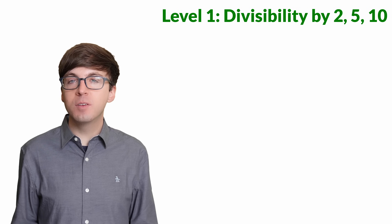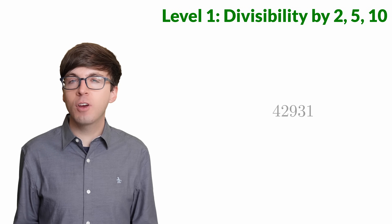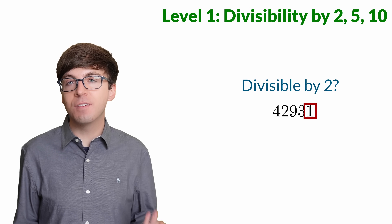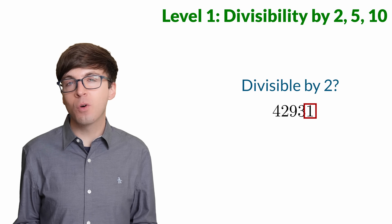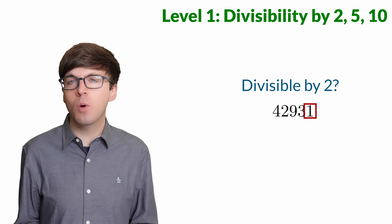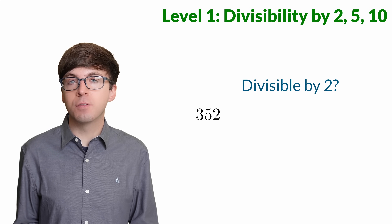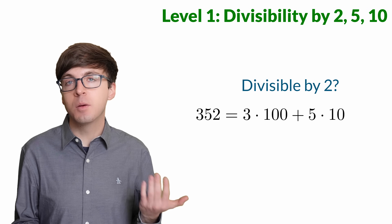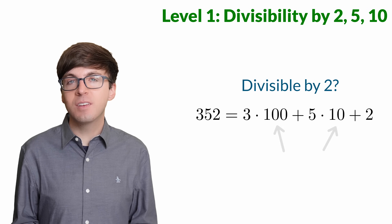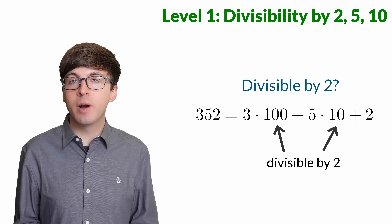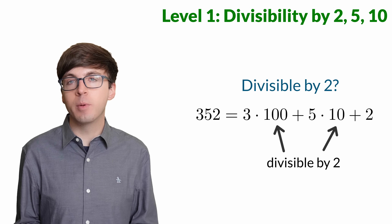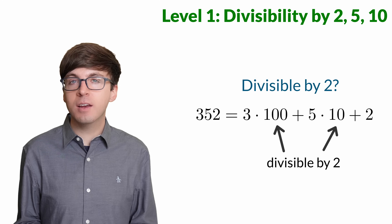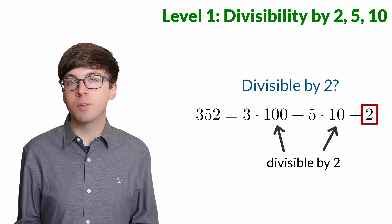First, let's talk about divisibility by 2, 5, and 10. To check if a number is divisible by 2, we look at the last digit and see if that digit is divisible by 2 — we can ignore all the higher order digits. Why is that? Say we have the number 352. We can write this as 3 times 100 plus 5 times 10 plus 2 times 1. Since 10 and 100 are both divisible by 2, those terms are automatically divisible by 2, no matter what digits are in those positions. So all we have to check is that the 1's digit is divisible by 2.